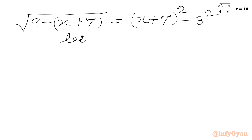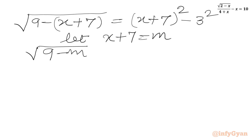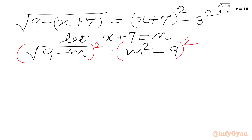Now let us use the substitution x plus 7 equals m. So the equation becomes square root of (9 minus m) equals m squared minus 9, since 3 squared is 9. Now we will square both sides, giving us 9 minus m equals (m squared minus 9) squared.